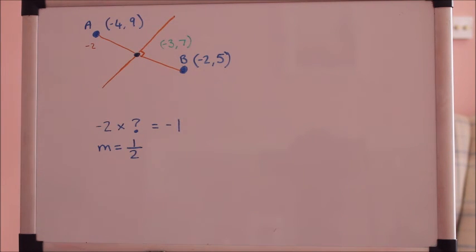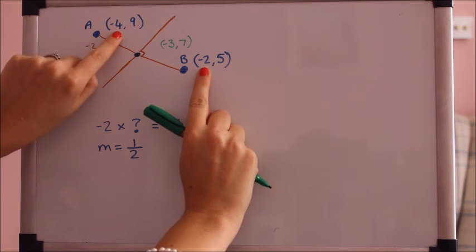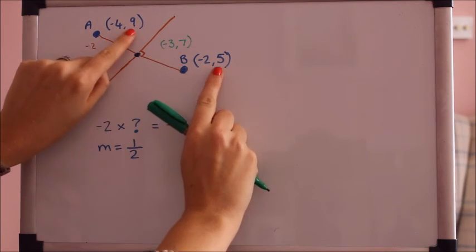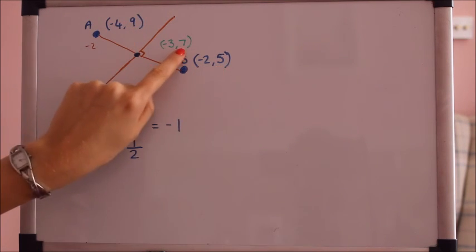If you're struggling with that then a good tip is to add the two numbers and divide by 2. I'll just show you what I mean: add these two numbers gives you minus 6, divide by 2 gives you minus 3. Add these two numbers gives you 14, divide by 2 gives you 7.